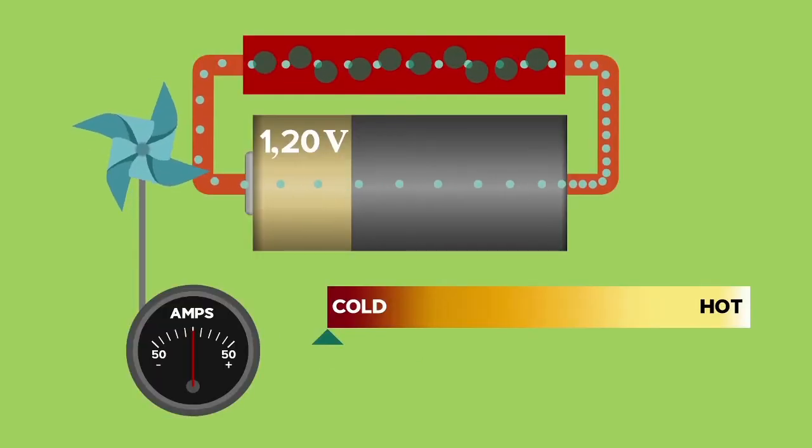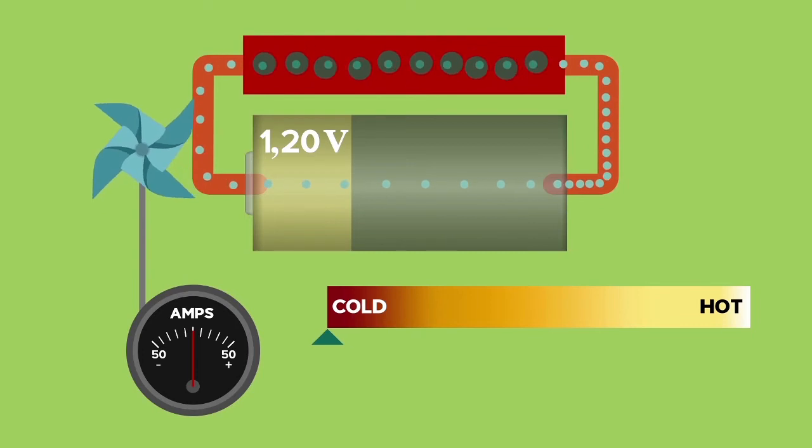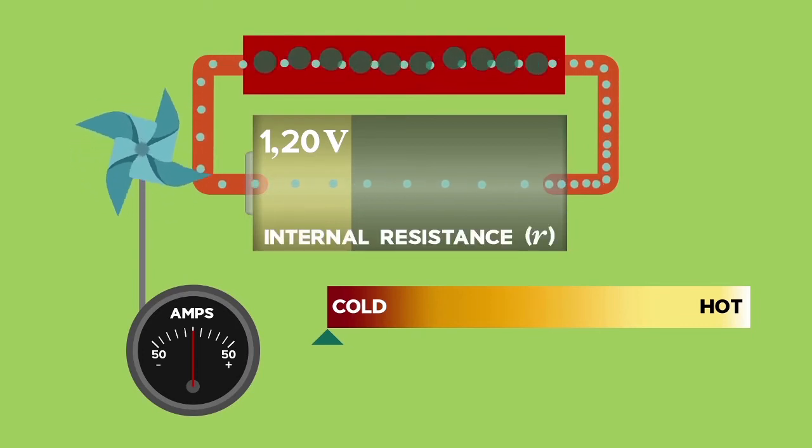When the current flows, the charges must also pass through the battery. The battery provides a resistance to the flow of charge, and this resistance is called internal resistance.